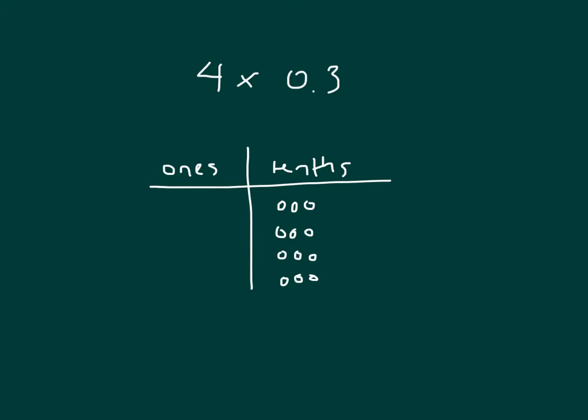What makes this different is that I'm not going to write that many in my tenths place. I have to regroup. I'll regroup 10 of them, and 10 tenths equals a whole. So I have 1.2 as my answer.